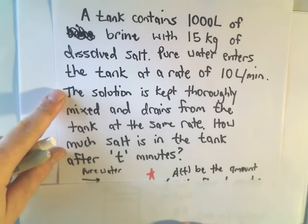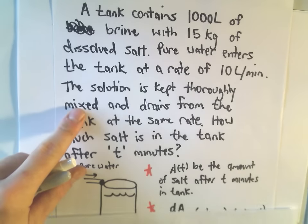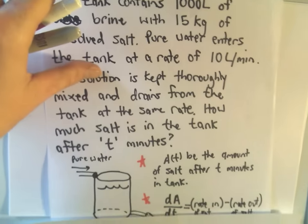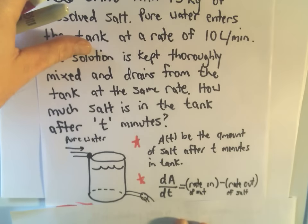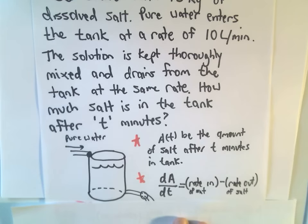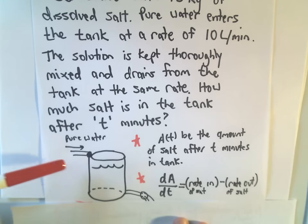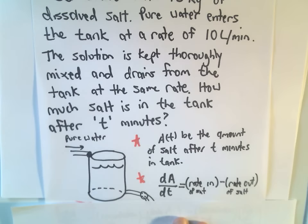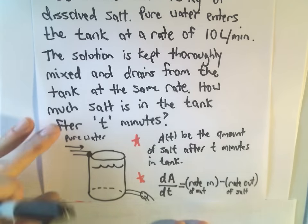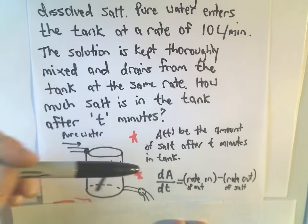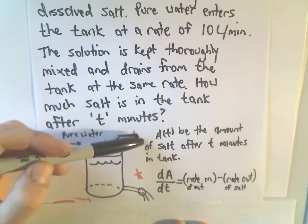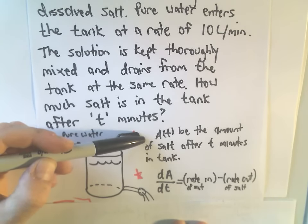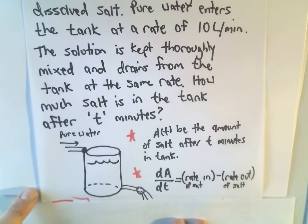Okay, so here's our little tank here. It's a beautiful tank. So the idea, we've got our little tank here, pure water's coming in and certainly this salt water mixture is coming out. And just to label things, we're going to say A of T, that's going to be the amount of salt in the tank after t minutes.